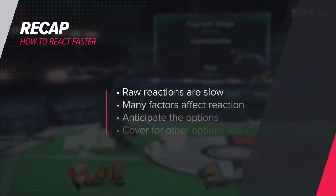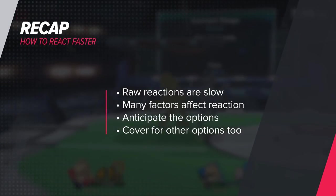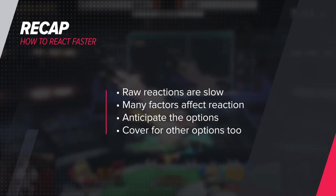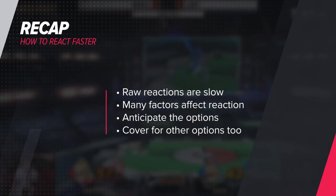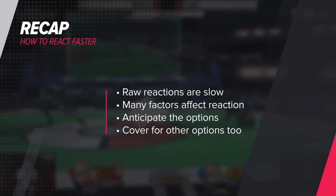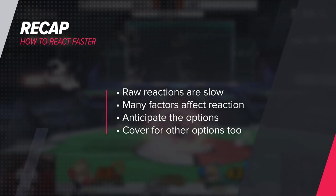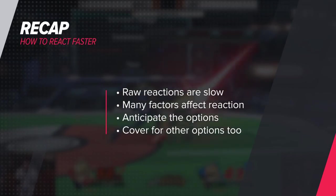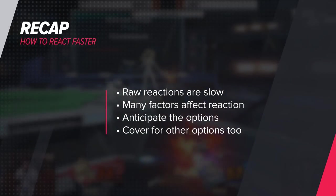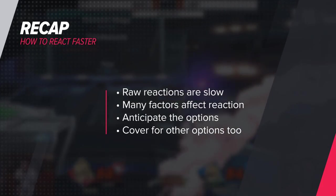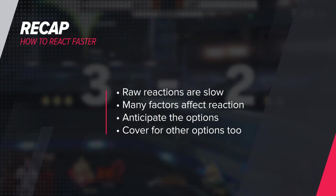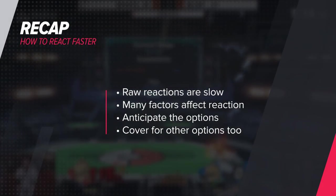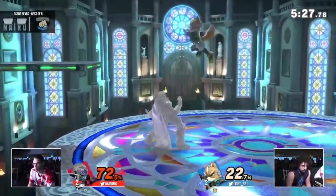To recap: raw reactions are incredibly slow. Reacting to an option without anticipating it gives you an average reaction time of around 26 frames at best, because choice reaction plus hardware delays severely impacts your reaction time compared to simple reactions. By knowing what options are available to your opponent, you can prioritize and anticipate a specific option to react to it faster, while safely covering other options.